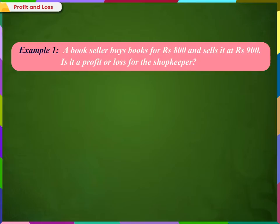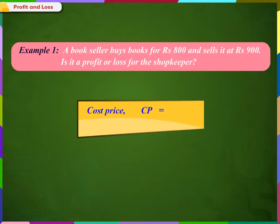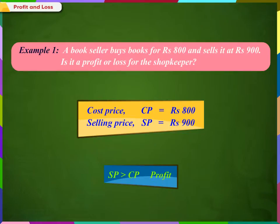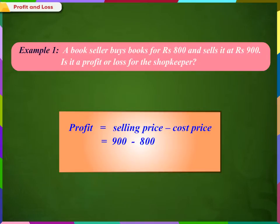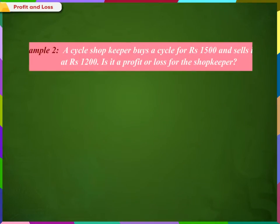Let us solve a few problems to get a better understanding of the topic. A bookseller buys books for Rs. 800 and sells them at Rs. 900. Is it a profit or loss for the shopkeeper? Here, the cost price is Rs. 800 and selling price is Rs. 900. Since the selling price is greater than the cost price, we can say it is a profit. And how much is the profit? Profit is equal to the selling price minus the cost price, that is, 900 minus 800, which equals Rs. 100. A profit of Rs. 100 means the article was sold at Rs. 100 more than the cost price.